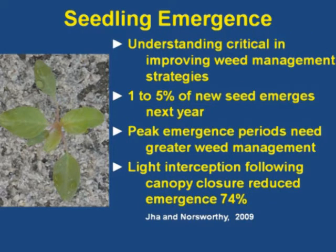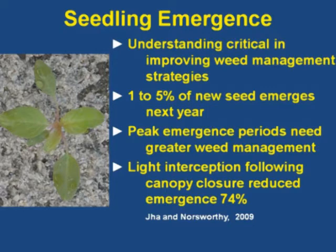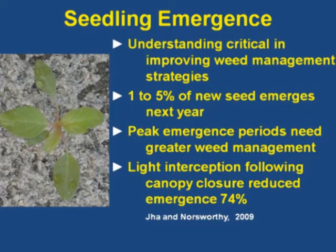Understanding seedling emergence is critical to improving your weed management systems. You can't let Palmer come up and produce seed. There's really no good data on how many seeds emerge the next year — it's somewhere between one and five percent, and maybe more. But one to five percent of 200,000 to 600,000 seeds is more than you need. You get good rainfall, the right temperature, an open canopy, and you're going to get emergence of Palmer all the way through the growing season. Dr. Norsworthy and Jada have shown that closing the canopy can reduce emergence about 74 percent.